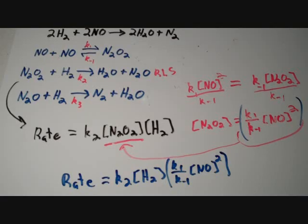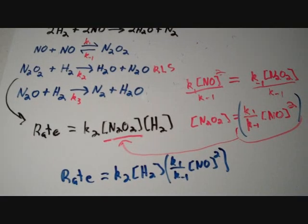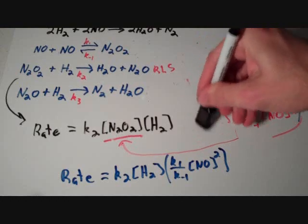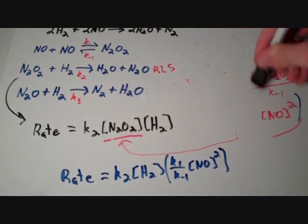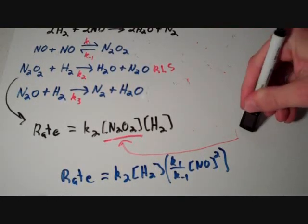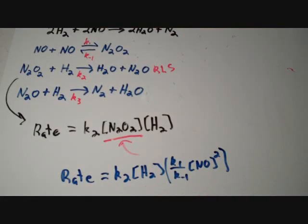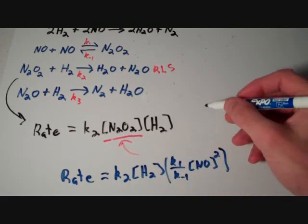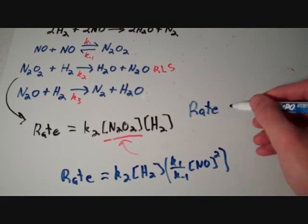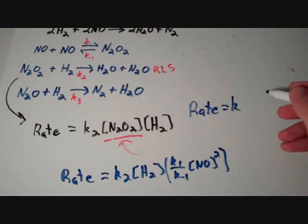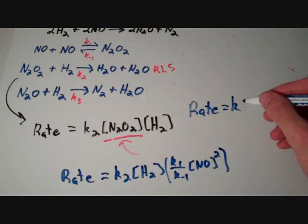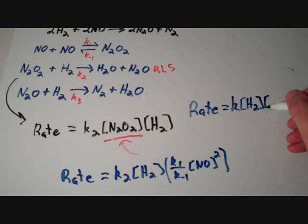And, we can actually clean this up a little bit and rewrite this equation. I'm going to erase this over here, give myself a little bit more room. So, this equation looks pretty ugly, so I'm just going to clean it up. And, we'll just say that the rate equals K times the concentration of H2 times the concentration of NO squared.